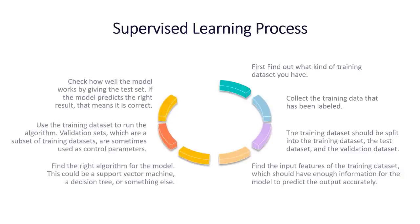Supervised learning process: first, find out what kind of training data set you have; collect the training data that has been labeled; split the training data set into the training data set, the test data set, and the validation data set; the input features of the training data set should have enough information for the model to predict the output accurately; find the right algorithm for the model — this could be a support vector machine, a decision tree, or something else; use the training data set to run the algorithm; validation sets, which are a subset of training data sets, are sometimes used as control parameters; and check how well the model works by giving it the test set.